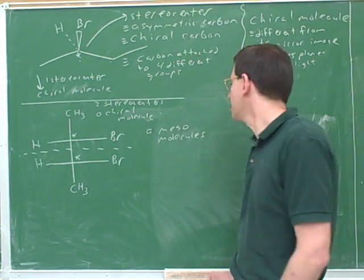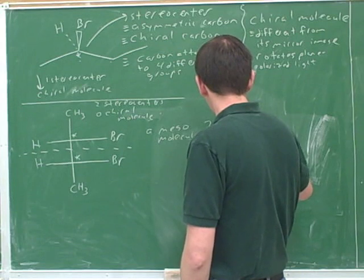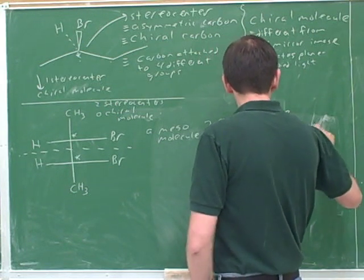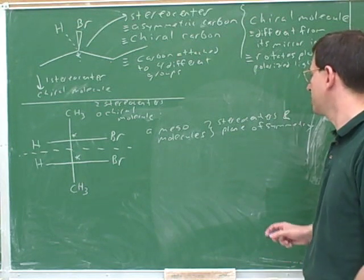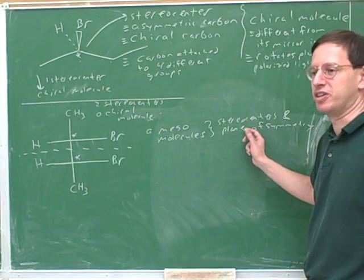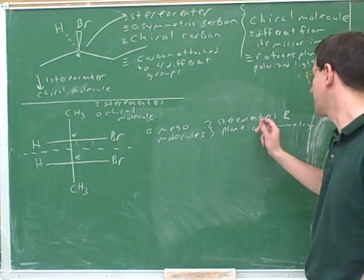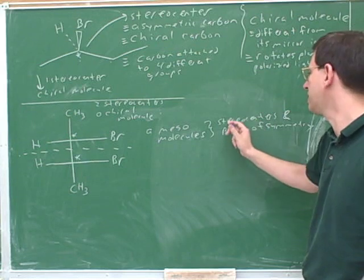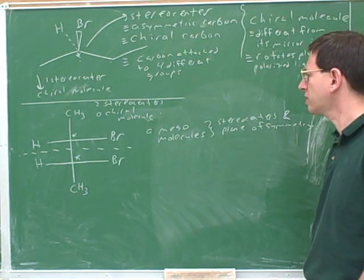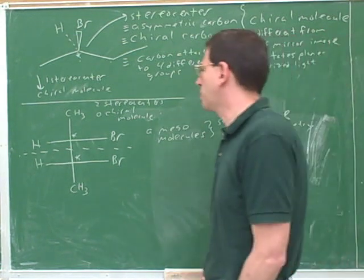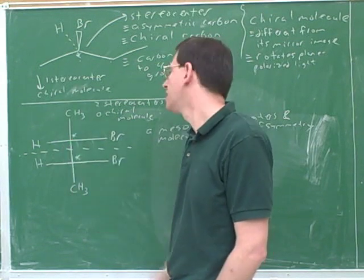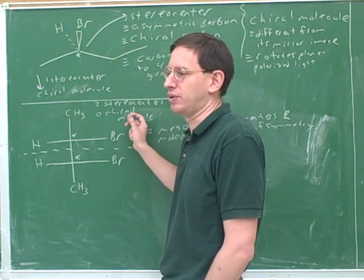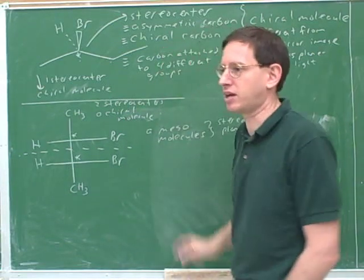So what does meso mean? Meso means you have stereocenters and a plane of symmetry. The official definition is that you have stereocenters but you're still an achiral molecule — but that must mean you have a plane of symmetry. So for practical purposes, meso molecules have stereocenters but also a plane of symmetry, which means meso molecules are always achiral despite the fact that they have stereocenters. You need to have both of these things in order to be meso. We can quickly see a molecule has stereocenters by finding carbons with four different groups attached, and then quickly confirm it's meso by finding the plane of symmetry. There's a big difference between having chiral carbons and being a chiral molecule.